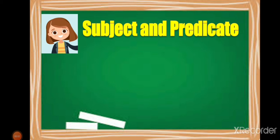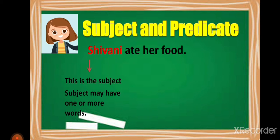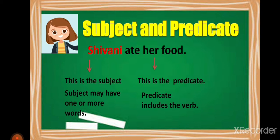To understand subject and predicate properly, let us take one example. Shivani ate her food. Here the sentence is talking about Shivani, so Shivani is the subject. Subject may be one or more words and is a noun or a pronoun. What is Shivani doing? She ate her food — so 'ate her food' is the predicate. Predicate includes the verb.